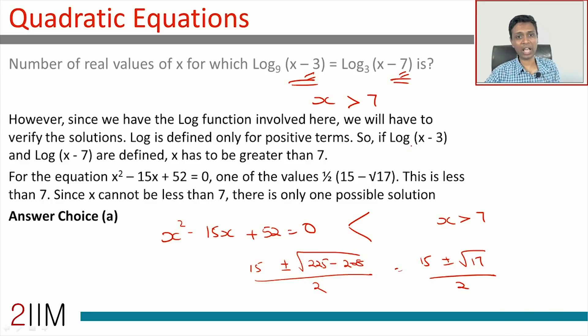There's no such thing as log of a negative number. Between the two roots, the quadratic equation has two real roots, which is great, but both real roots will not satisfy this because one of the real roots will be less than 7, giving us log of (x - 7), which is log of a negative number, which is not possible.